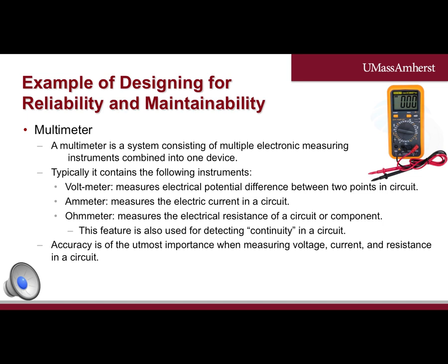A multimeter is a system consisting of multiple electronic measuring instruments combined into a single device. Typically, a multimeter contains a voltmeter, an ammeter, and an ohmmeter. A voltmeter is an instrument for measuring the electric potential between two points in a circuit. An ammeter is an instrument for measuring the electrical current in a circuit. An ohmmeter is an instrument for measuring the electrical resistance of a circuit or component, and is also useful for checking continuity between two points on a circuit — checking to see if two points are directly connected by a wire or trace, which is useful in PCB design, testing, and troubleshooting.